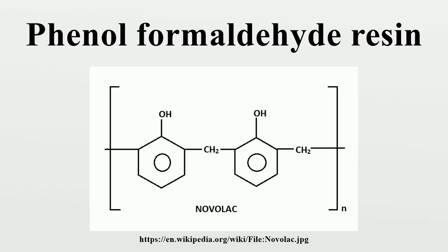The initial reaction in all cases involves the formation of a hydroxymethyl phenol: HOC₆H₅ + CH₂O → HOC₆H₄CH₂OH. The hydroxymethyl group is capable of reacting with either another free ortho or para site, or with another hydroxymethyl group. The first reaction gives a methylene bridge, and the second forms an ether bridge. HOC₆H₄CH₂OH + HOC₆H₅ → (HOC₆H₄)₂CH₂ + H₂O. The diphenylmethane product is called bisphenol F, which is an important monomer in the production of epoxy resins.